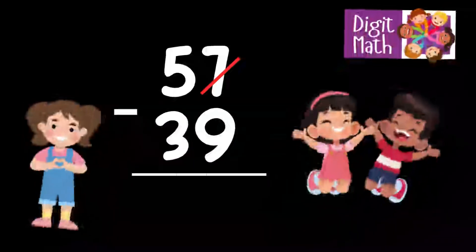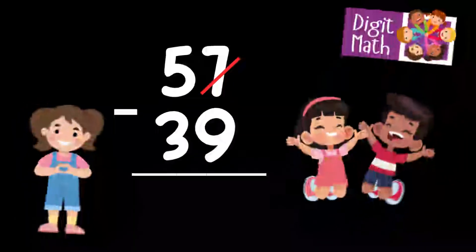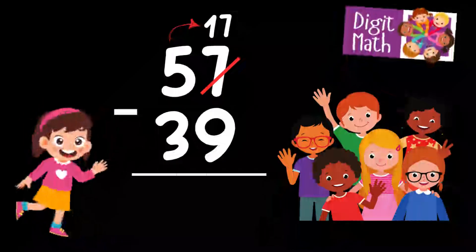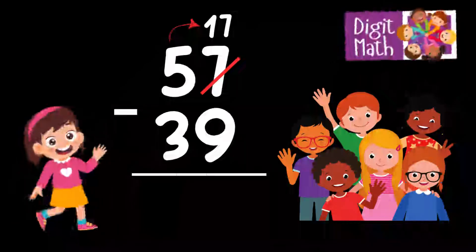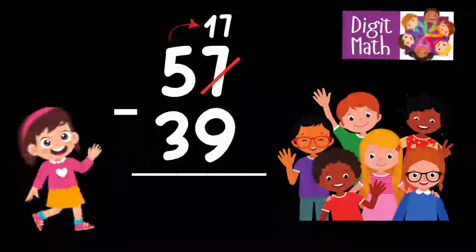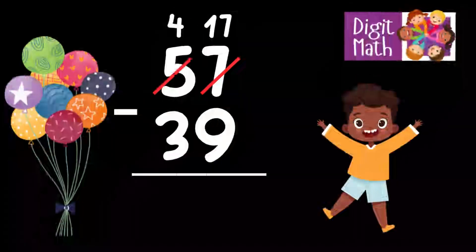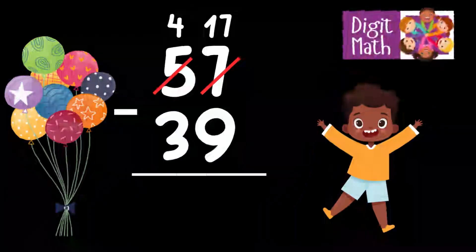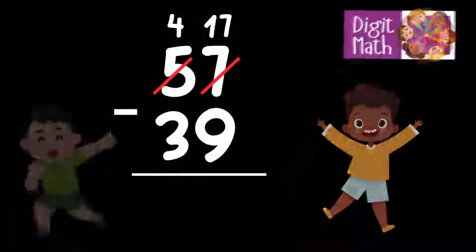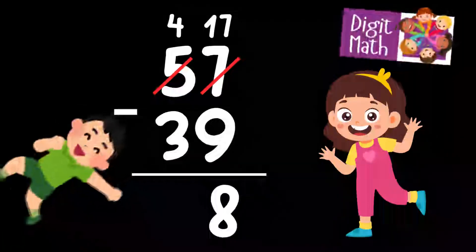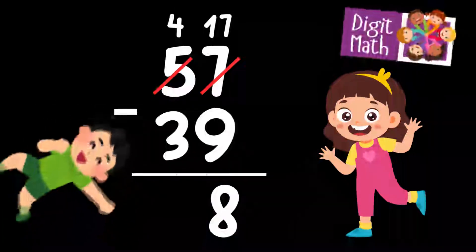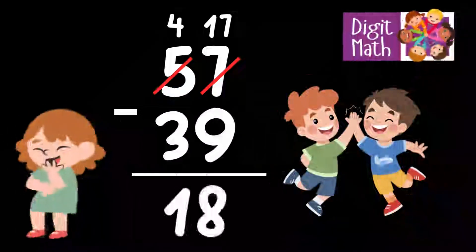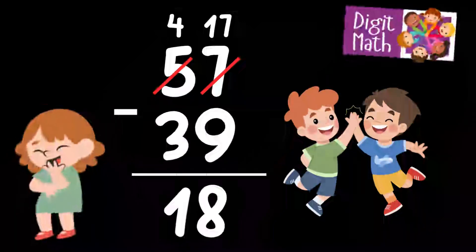In the Units column, we have 7 minus 9. Since it's not possible to subtract 9 from 7, we need to borrow from the Tens column. In the Tens column, we have 5. We take 1 from the Tens, leaving 4 in the Tens column and turning the Units column into 17. Now we have 17 in the Units column. Subtract 9 from 17, which equals 8. In the Tens column, we now have 4. Subtract 3 from 4, which equals 1. So the final result is 57 minus 39 equals 18.